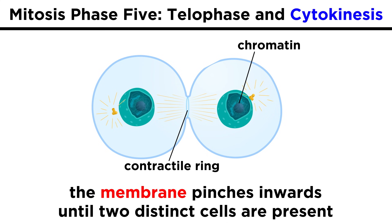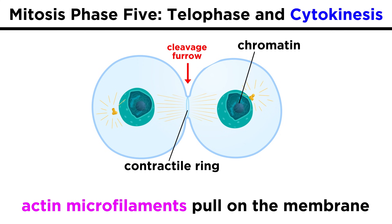To finish things up, cytokinesis will occur, which is where the cytoplasm — which has already begun dividing the cell into two smaller ones — will continue until the cells are distinct and separate. This starts with a cleavage furrow at the metaphase plate, caused by actin microfilaments that pull the cell inwards like a drawstring, which eventually pinches the cell in two.